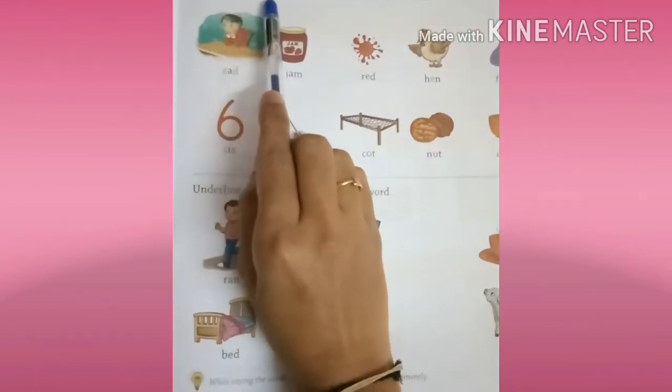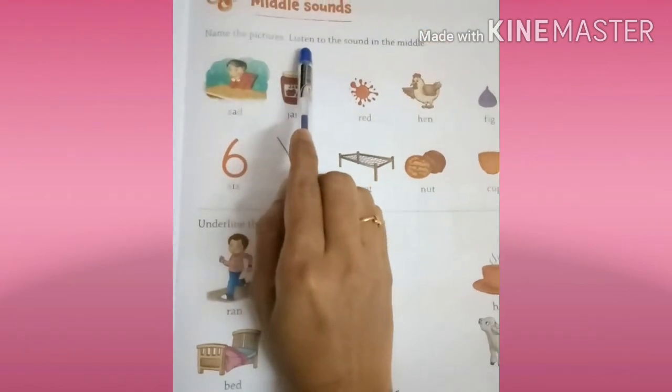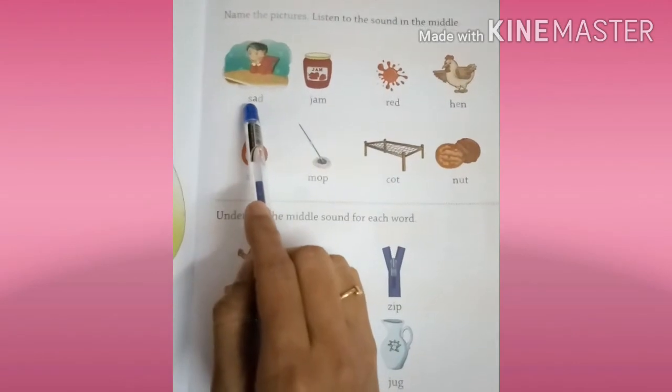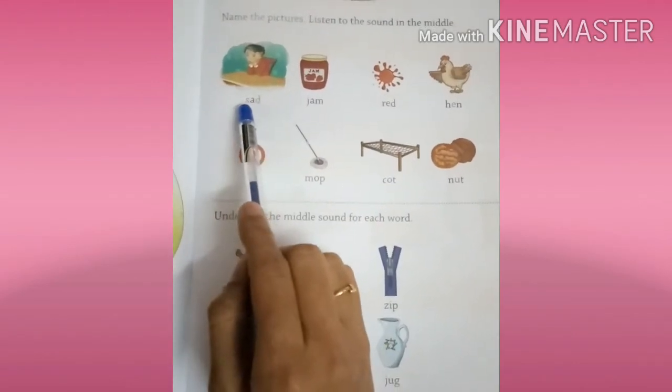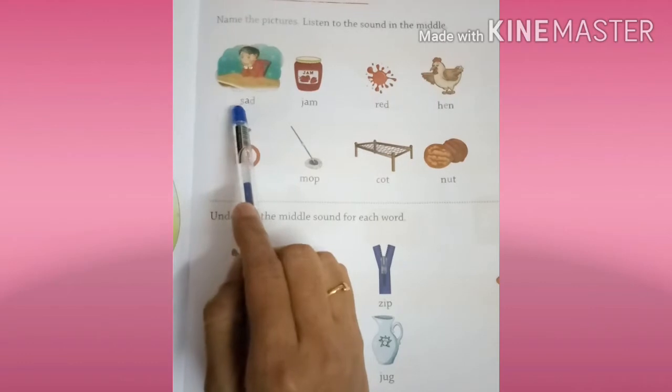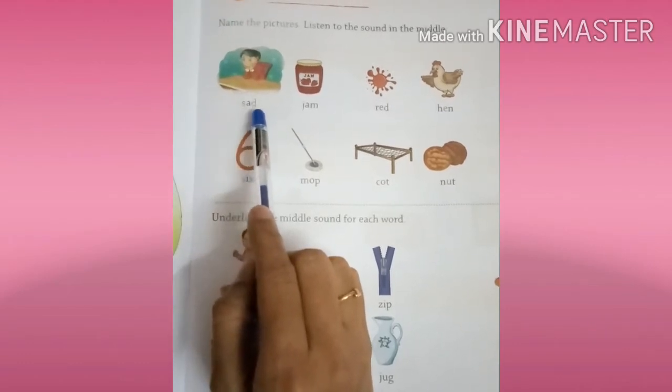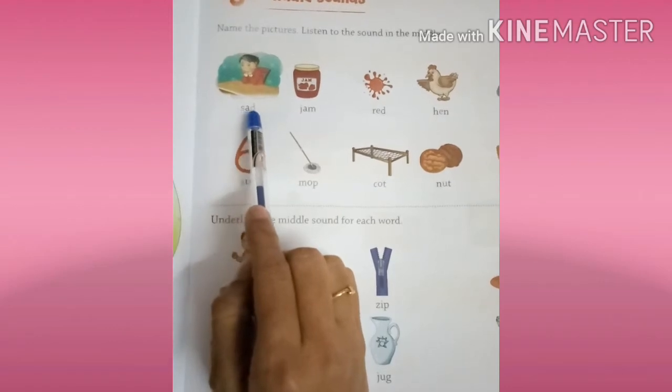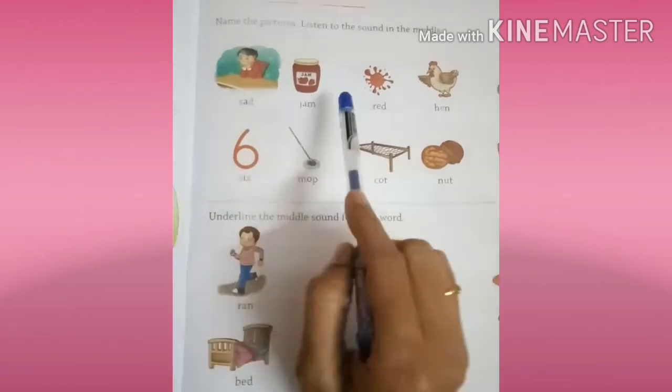Name the pictures, listen to the sound in the middle. Okay. S-A-D, S-A-D. S sound is S, A sound is A, D sound is D. S-A-D, sad.